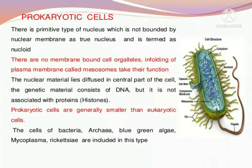But in prokaryotic cells there is a special organ — its name is mesosome. Mesosome is actually the infolding of the plasma membrane. Its function is to synthesize energy and to divide the nuclear DNA. So dividing the nuclear DNA and producing the cell's energy — this work is done by the mesosome.